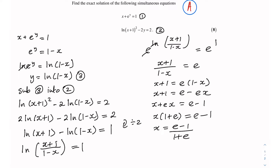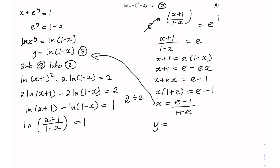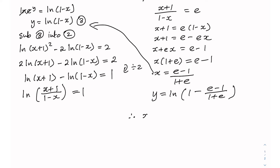Now I need to work out a solution for y. I can substitute x = (e − 1)/(1 + e) into equation 3. Doing this gives y = ln(1 − (e − 1)/(1 + e)). So the final answers are x = (e − 1)/(1 + e) and y = ln(1 − (e − 1)/(1 + e)).